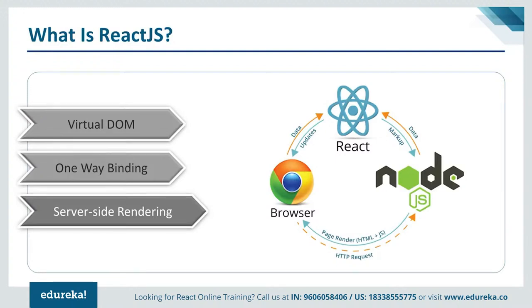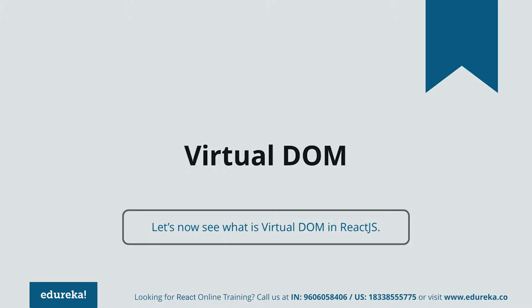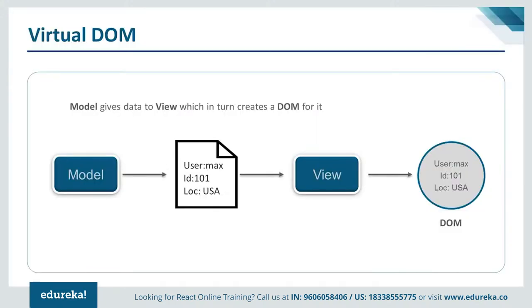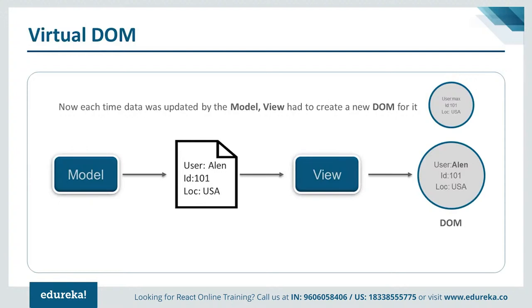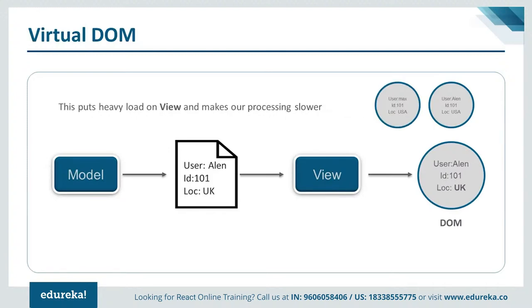Looking at the virtual DOM more closely: the model gives data to the view, which creates a DOM for it. Traditionally, whenever the data was updated by the model, the view had to create a new DOM, meaning the DOM creation process happened multiple times. This created a lot of additional data structures, heavy memory consumption, and put a heavy load on the view. Since response time is a key goal of any UI-based application, slow DOM manipulation means users feel the application is running very slowly.